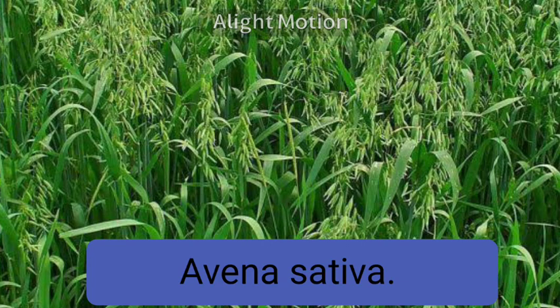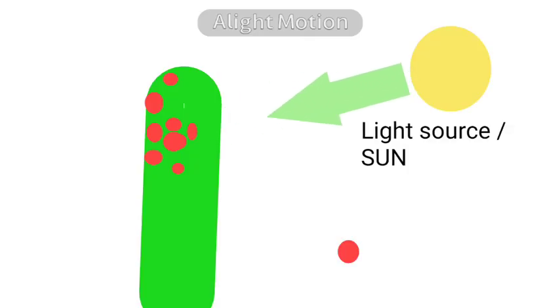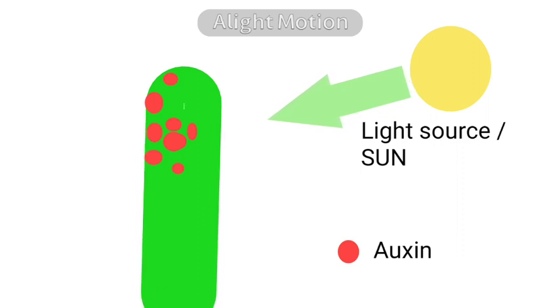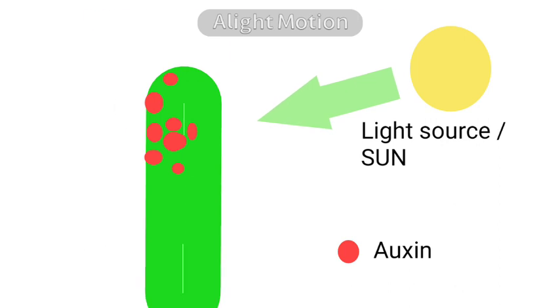When sunlight strikes, the Avena coleoptile shows a bending movement. Went took this experiment a little further to perform some additional experiments.